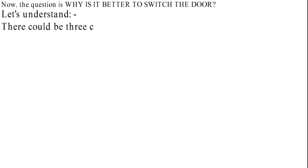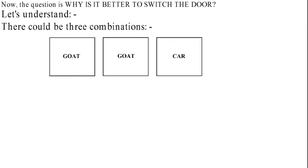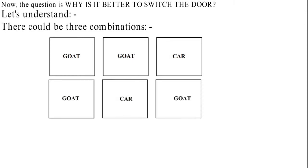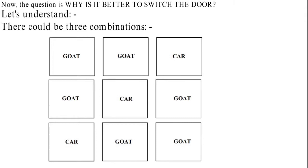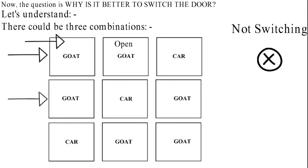Let us understand the concept behind it. There could be three combinations of goats and car which are goat goat car, goat car goat, and car goat goat. Let us consider the case in which I'm not at all switching that means I choose gate number one and the host opens up the gate number two. But I still stick to gate number one and end up with the goat. In the second case I again choose the gate number one and the host opens up the gate number three.